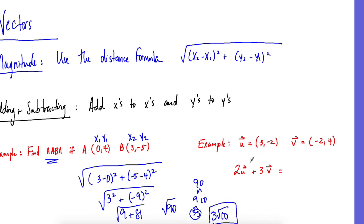Over here we got two U plus three V, so we're going to distribute. That's six negative four plus negative six twelve. Add your X's, six and negative six is zero. Negative four and 12 give me positive eight, and that would be your answer for those two problems.